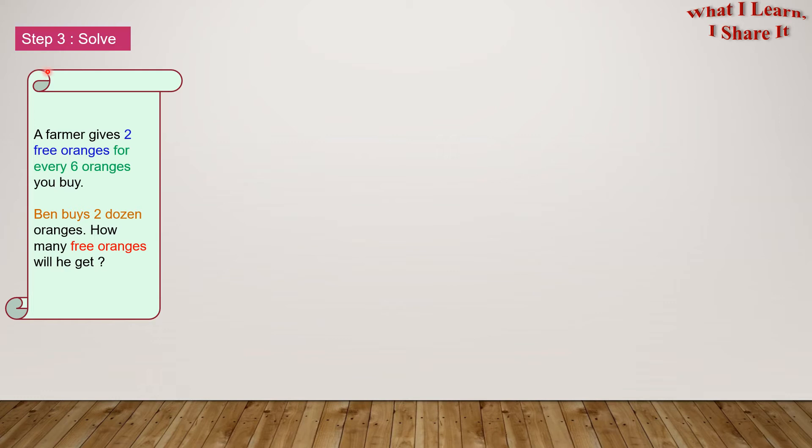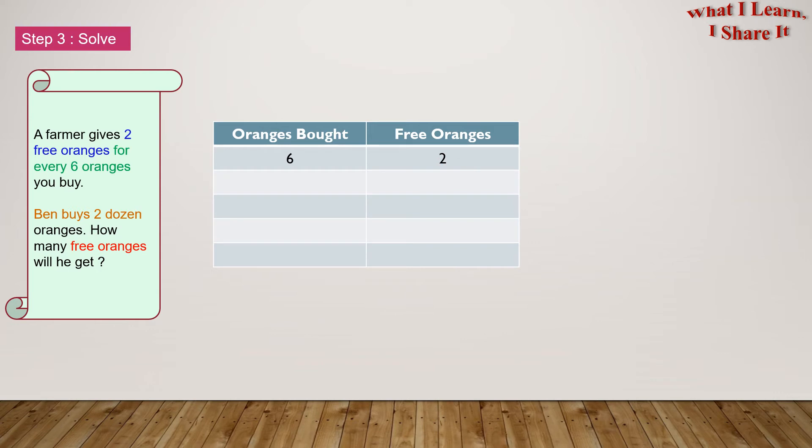Step 3. Solve. And here is our table for the Make a table strategy. One side is oranges bought. And the other side is free oranges. So if 6 oranges are bought, how many free oranges are there? Right, there are 2. Look at the difference in that colour. So, on the oranges bought side, we're going to count by 6. And on the free oranges side, we're going to count by 2.